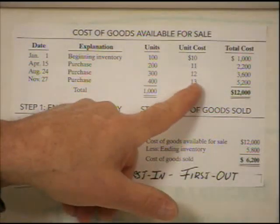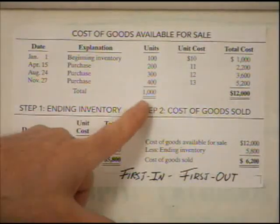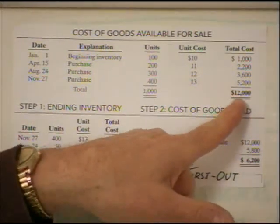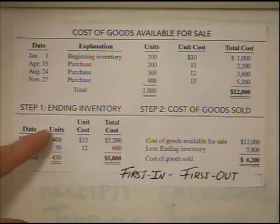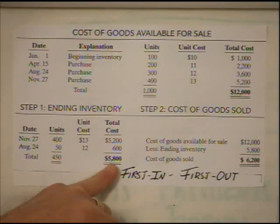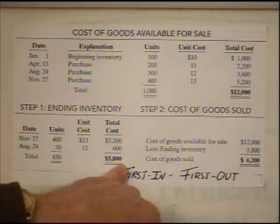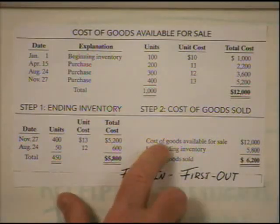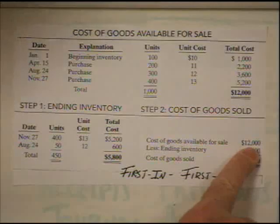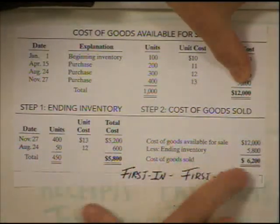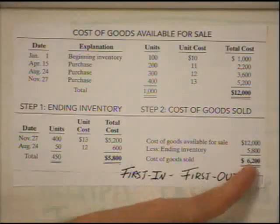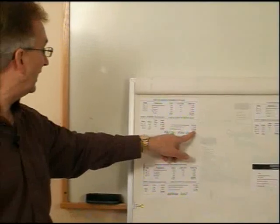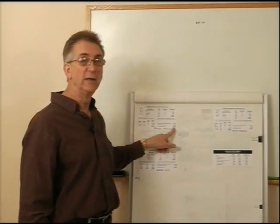The whole idea was to determine out of this $12,000 what remains unsold. We said there were 450 units. Here's the analysis: 400 units at $13 equals $5,200, and 50 units at $12 equals $600. We add them together and that's our ending inventory of $5,800. That's the amount shown as ending inventory. To determine our cost of goods sold, it's a simple math calculation: cost of goods available for sale was $12,000, minus ending inventory of $5,800, giving us a cost of goods sold of $6,200. That goes on our income statement and we subtract it from our sales.